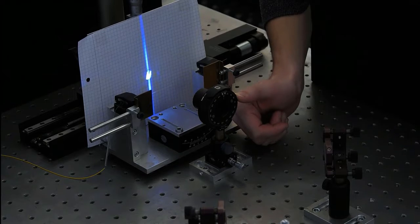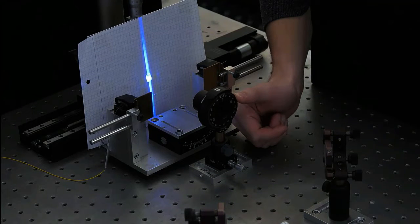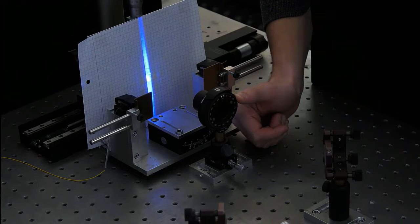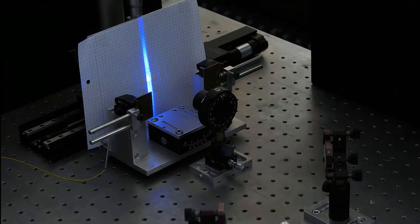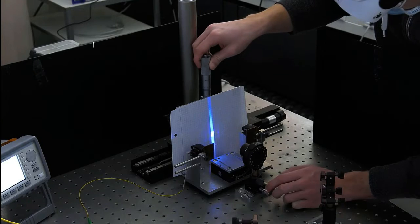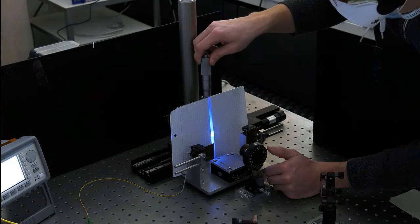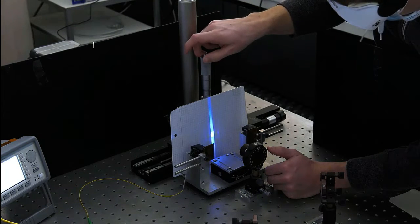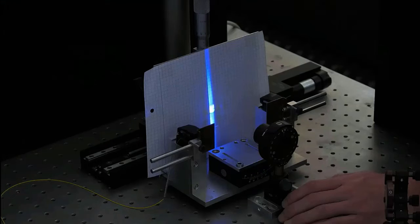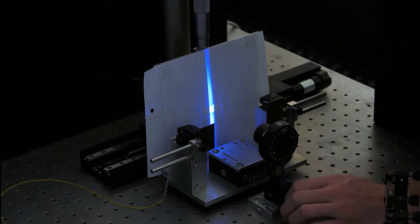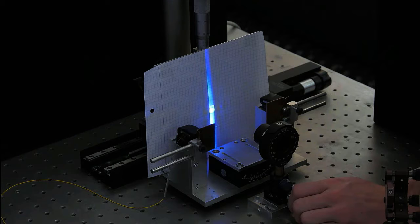By tuning the focusing lens, we will also change the angle with which the beam hits the fiber. To correctly align the fiber, we also need to adjust it, so that we exactly hit its core.